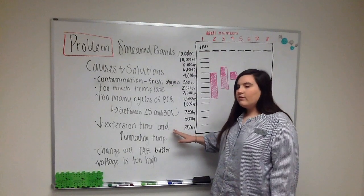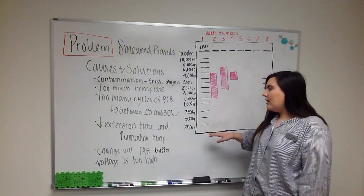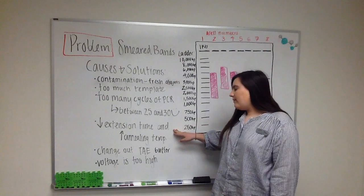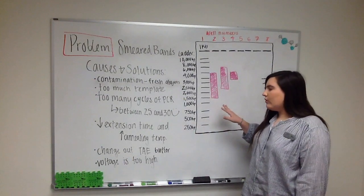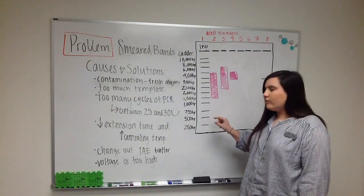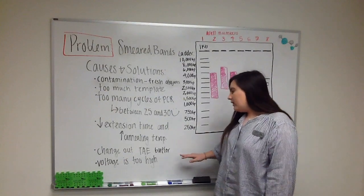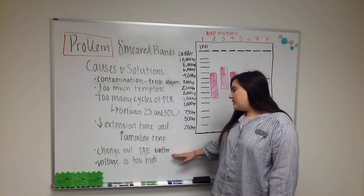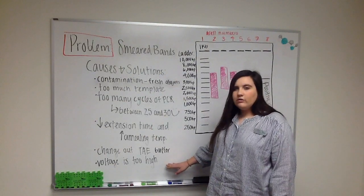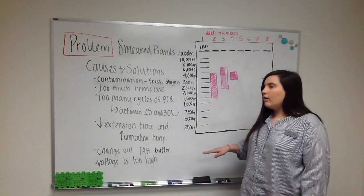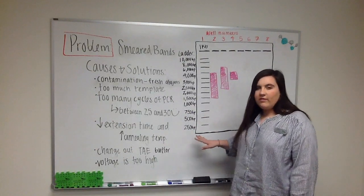Another two-fold step that you could take to try to reduce the smearing is to reduce the extension time and increase the annealing temperature. This might make your primers more specific to what you're trying to amplify resulting in a nice tight band. You could also try changing out your TAE buffer and your voltage might also be too high. Try lowering the voltage and then running it for a longer amount of time and see if that helps with the smearing.